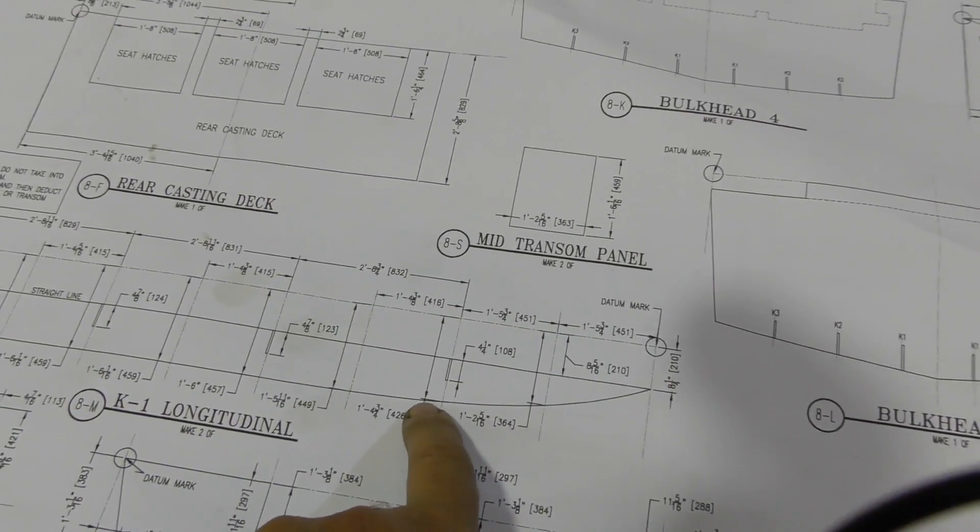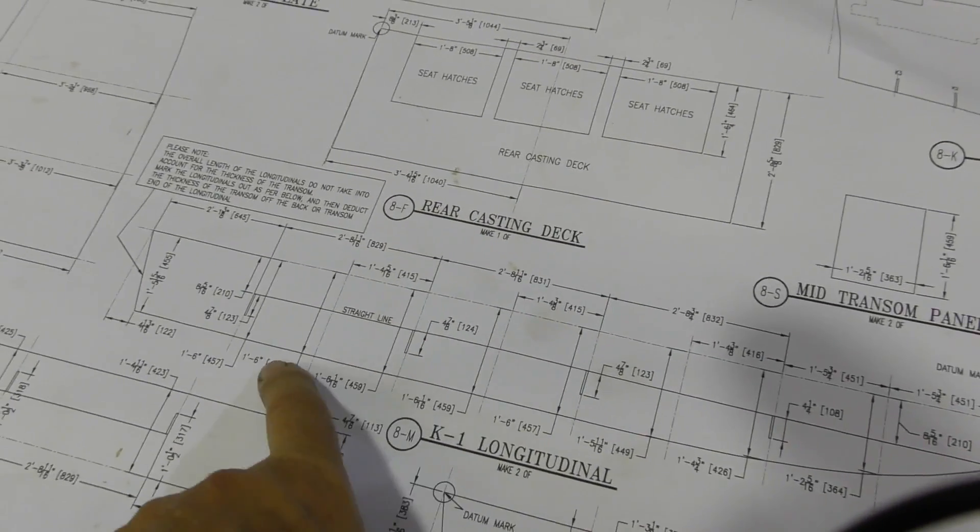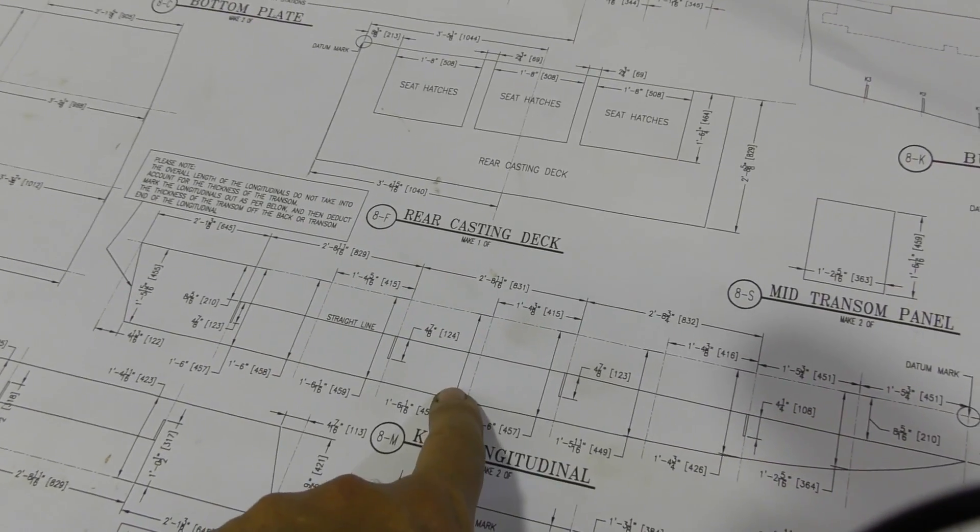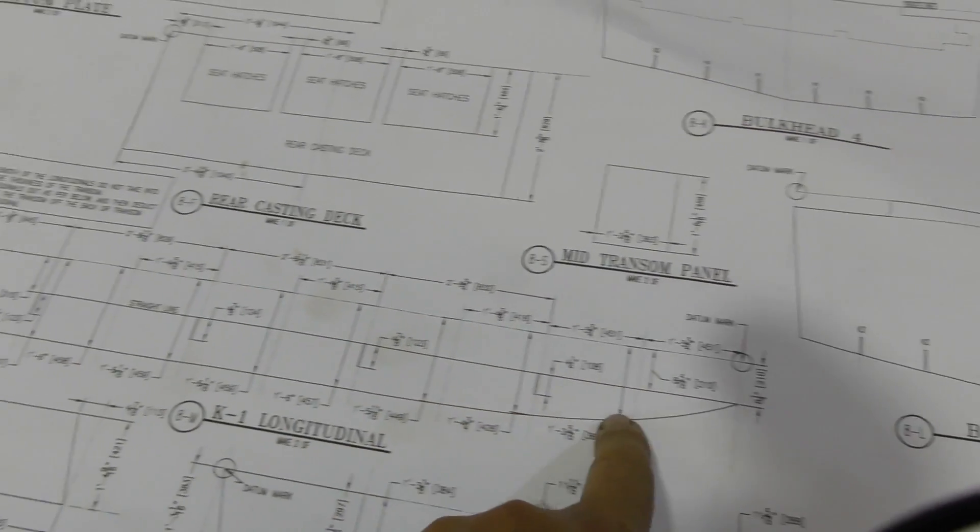With all these points, because we have to bend a batten around because it's a curve, where there's a point I'm just going to put a nail in and that's what we're going to be clamping our batten to.